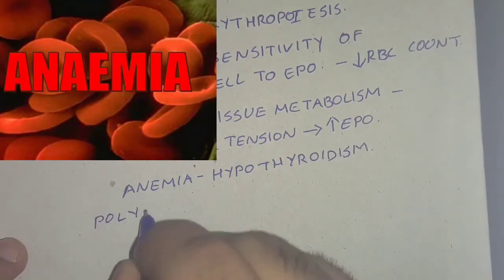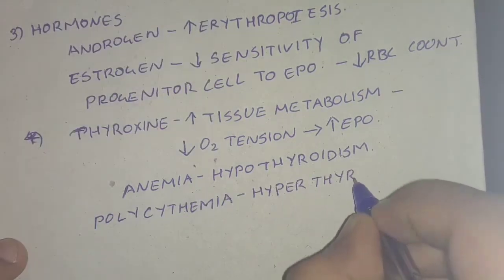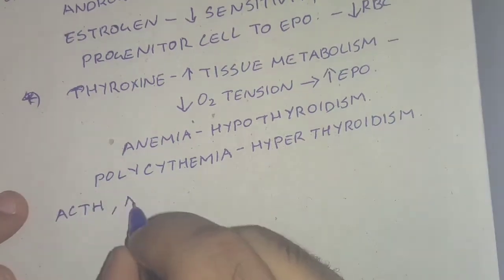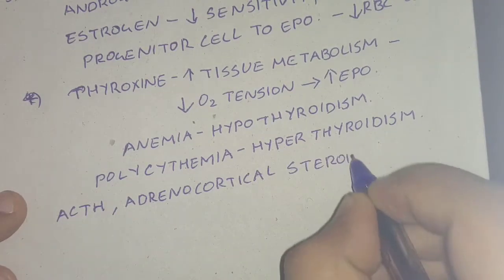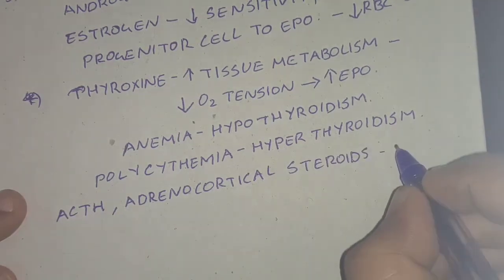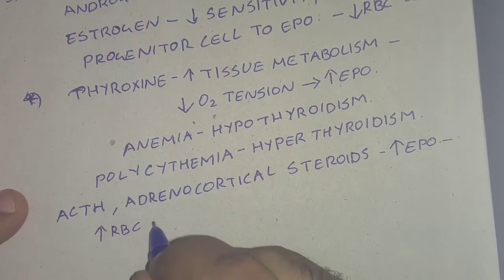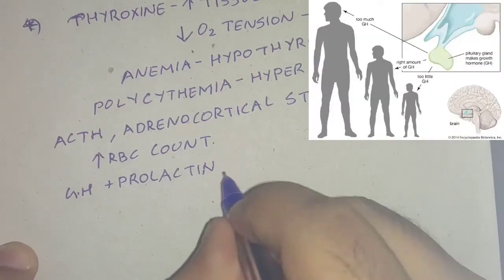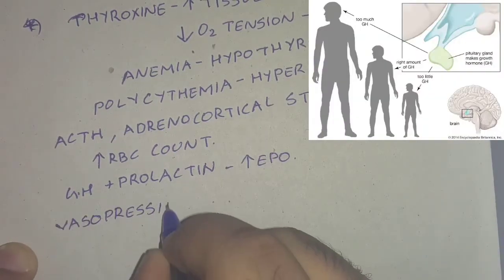Anemia is a feature of hypothyroidism and polycythemia is a feature of hyperthyroidism. ACTH and adrenocortical steroids increase EPO secretion leading to increased RBC count. Polycythemia is a prominent feature of Cushing syndrome.